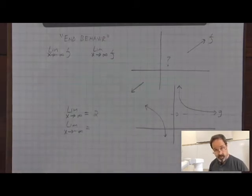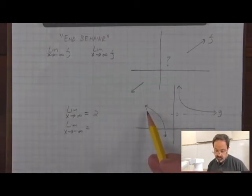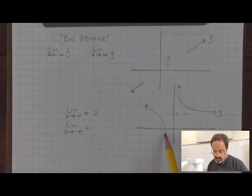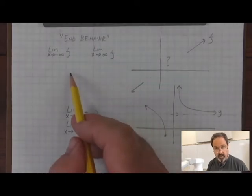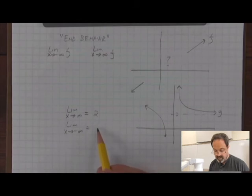Again, it might be hard to read, but this graph seems to suggest that the curve keeps on going up and up and up, and therefore the limit as x approaches negative infinity is infinity.